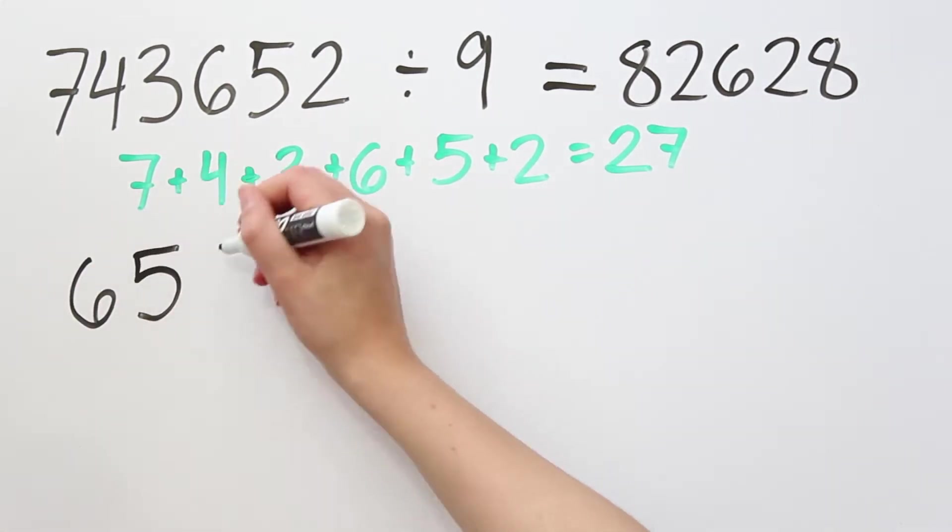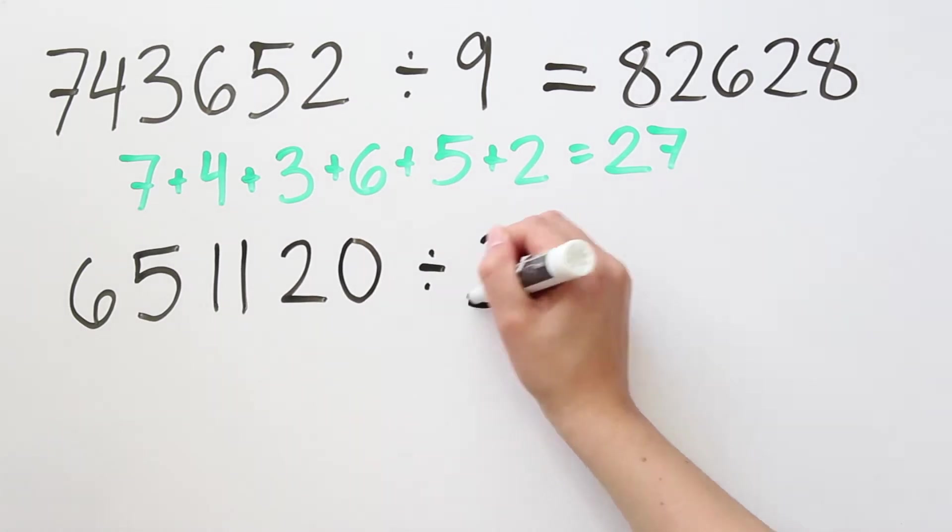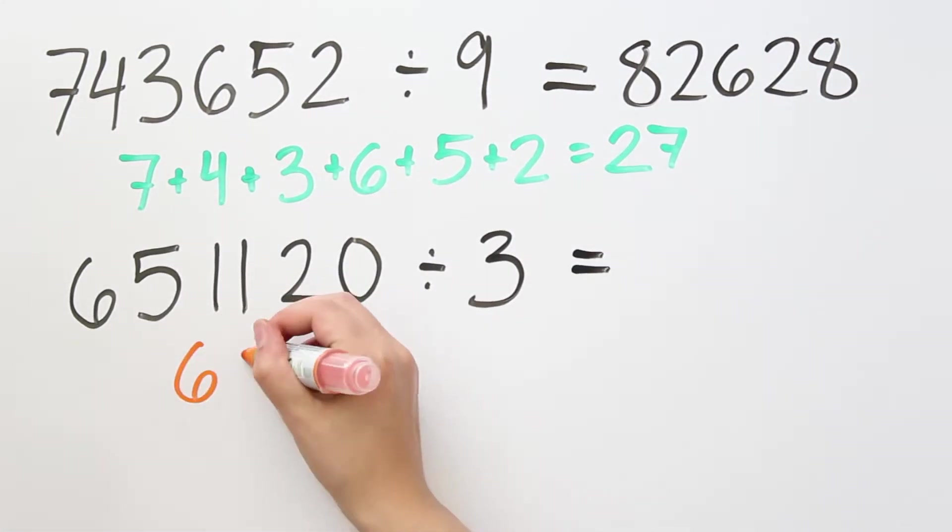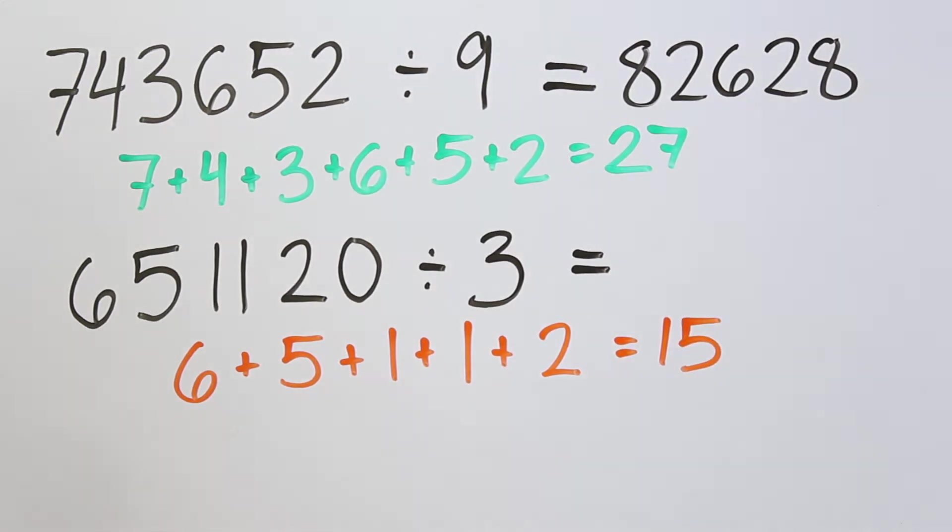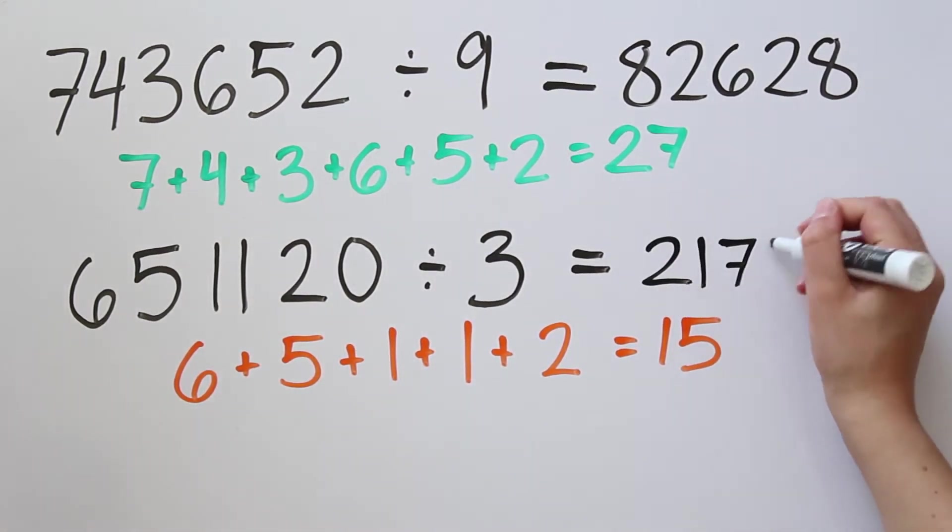The same trick works for 3s. We can see that 651,120 is divisible by 3 because 6 plus 5 plus 1 plus 1 plus 2 plus 0 is 15, and 15 is a multiple of 3.